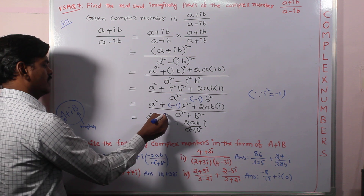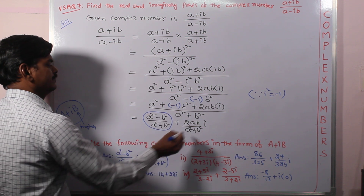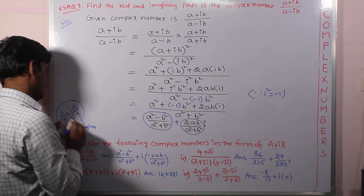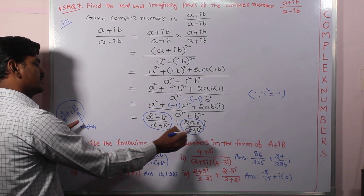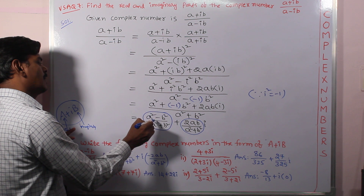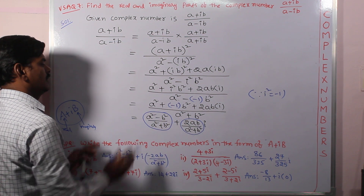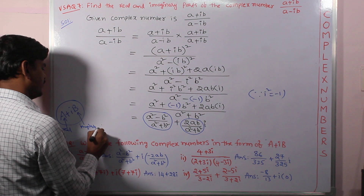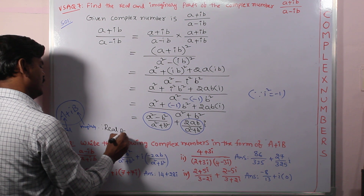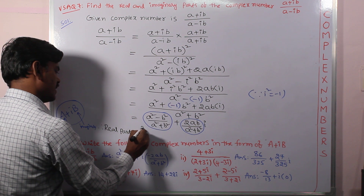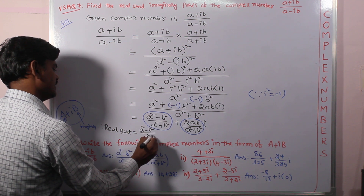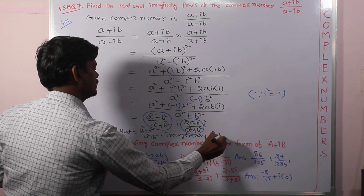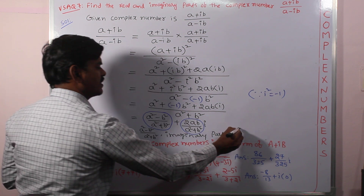If we assume this is in the form capital A + i·(capital B), then capital A is the real part and capital B is the imaginary part. Therefore, the real part equals (a² - b²) / (a² + b²), and the imaginary part equals 2ab / (a² + b²).